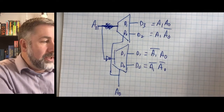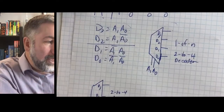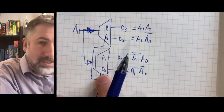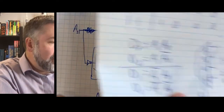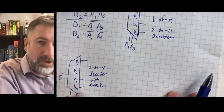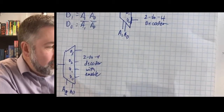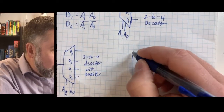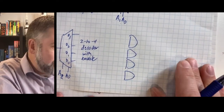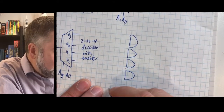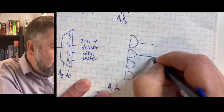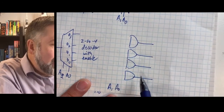So we could build a four-output decoder two ways: directly with AND gates, or by combining smaller decoders. If we build it directly with AND gates and an enable, we're going to have four AND gates — one for each minterm — with address lines A1 and A0 coming in, and four output lines going out. Each output line corresponds to one minterm.